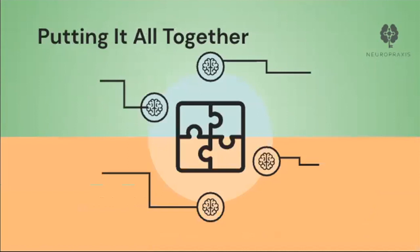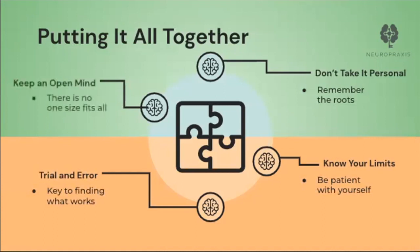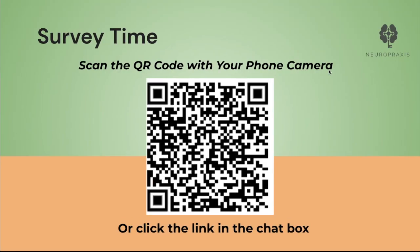That concludes our first module. The key takeaways are: don't take it personally, and remember that these behaviors are caused by physical changes brought on by a brain injury. Know your limits. Trial and error is key to finding what works — keep an open mind, as there is no one-size-fits-all solution. It may take some time to find what truly works, but keeping an open mind and being flexible is key. At this time we kindly ask that you complete our second survey for this module, which should only take about one minute to complete via the QR code or the link in the description box below.